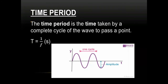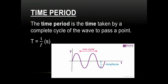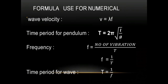Time period is the reciprocal of frequency. The time period is the time required to complete one cycle. One cycle means a complete crest and trough, or a complete rarefaction and compression.